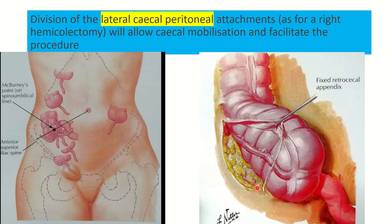This is the peritoneal fold — the lateral cecal peritoneal fold. Division of the lateral cecal peritoneal attachment will allow cecal mobilization and facilitate gaining access to the appendix. This attachment is usually cut during right hemicolectomy, but in case of a fixed retrocecal appendix, this incision is also required — meaning the lateral peritoneal attachment must be cut to gain access.